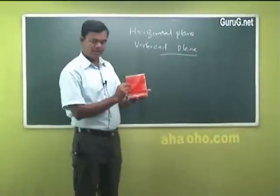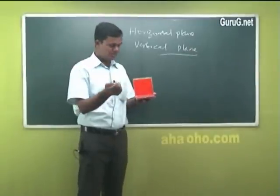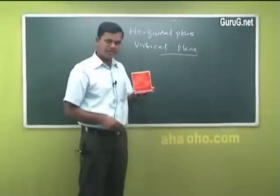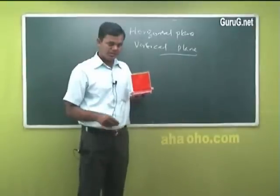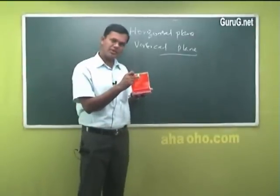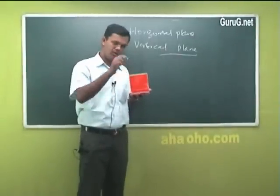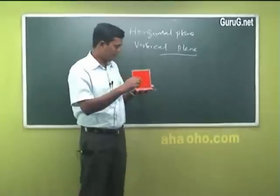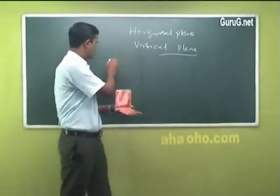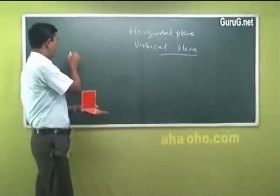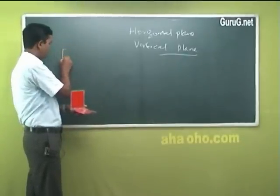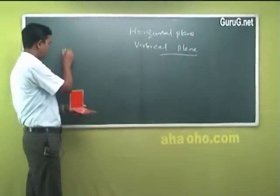Now, you just see this chalk piece from the front side. How do I see this? This chalk piece looks like a small line from the front. I will draw this front view. A chalk piece is like this — I will start from here. Front view is this — a small chalk piece.